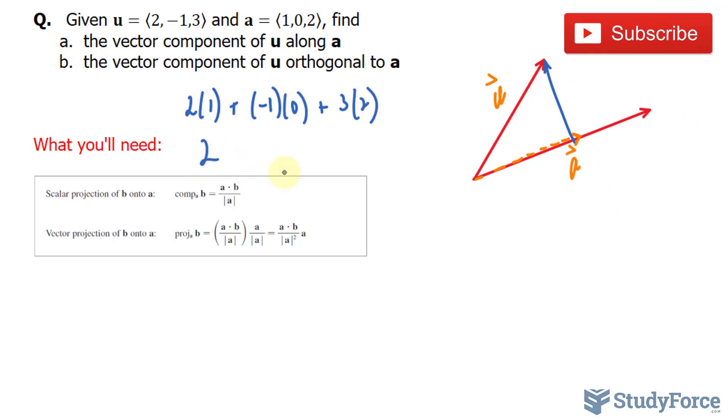2 times 1 is 2. That becomes 0. That's 6. This means that the dot product of u and a is 8.